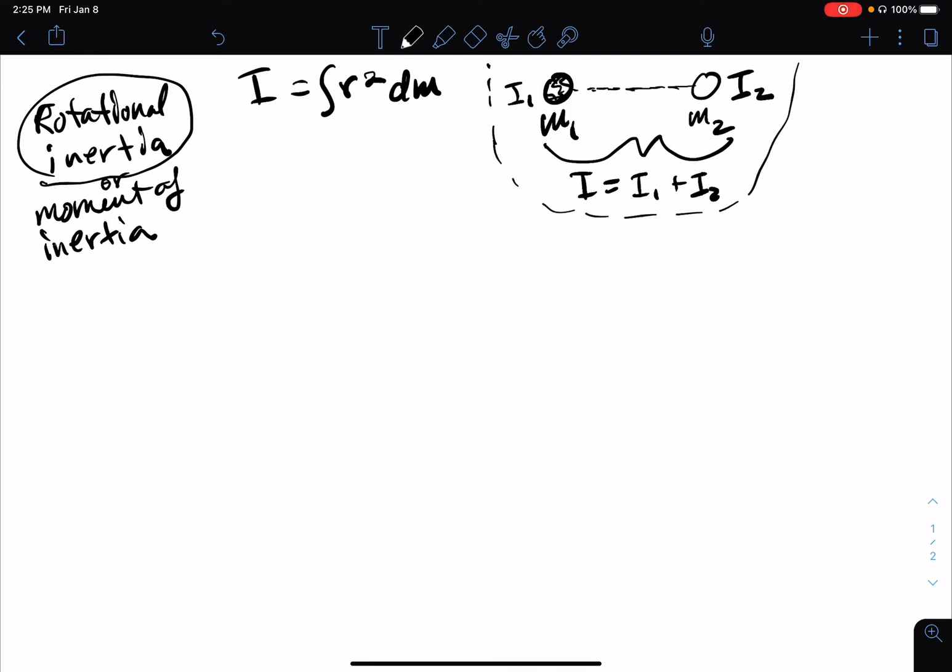So you can see then if we had infinitely many infinitesimal objects, it would go from being a summation to being an integral. That's why this switches from the sum of m r squared to r squared times dm. This is actually not that different than the center of mass idea we've talked about before.